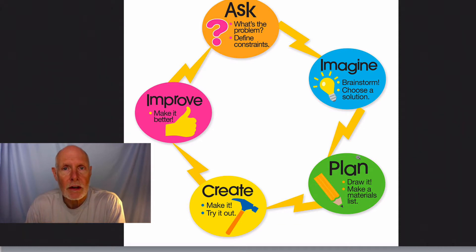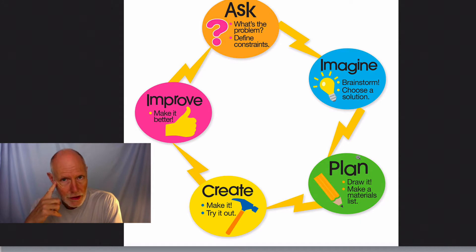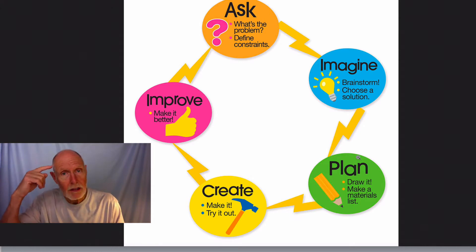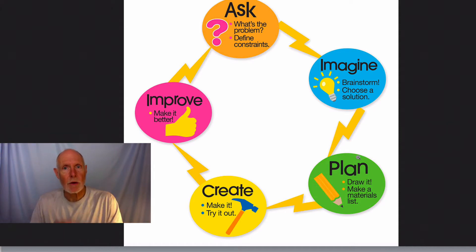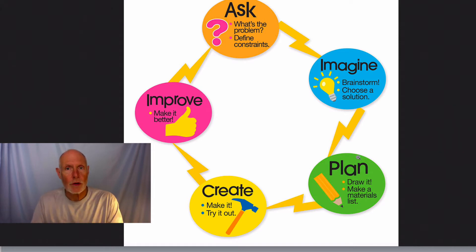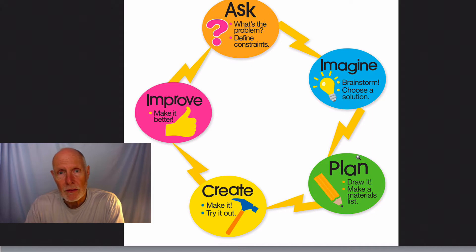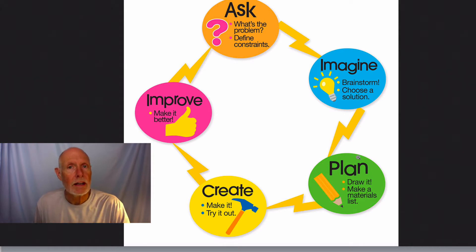So number one, we ask a question and identify the problem. Number two, we imagine — we brainstorm and think about a solution, just like when we were building your snake cage and I had you think through what it looks like in your mind. Then you plan it, draw it, make a list of materials. Then you create it — like when I had you make a little design out of straws first. Then we took that straw structure and improved upon it and made the snake cage out of wood. That's the design process — we use it whenever we're solving an engineering problem.